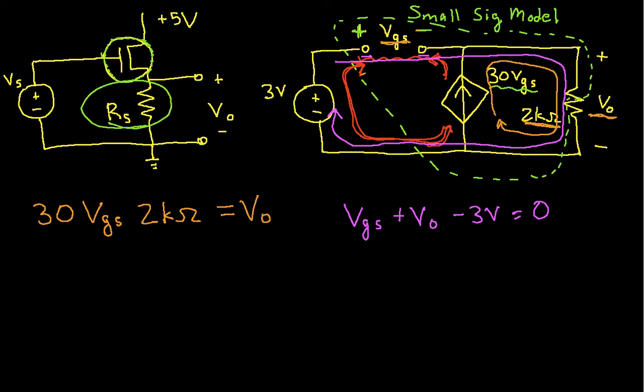Another way of looking at it is the voltage from this point to this point is set by the 3 volt source to be 3 volts. So that means that the voltage VGS from here to here, plus the voltage from here to here, V0, would be equal to 3 volts. So if I do the more informal analysis, I get this, which is mathematically equivalent to this.